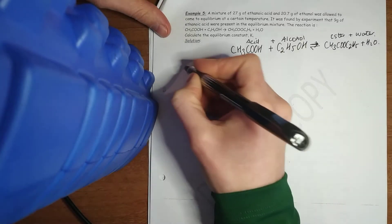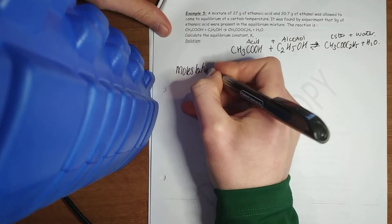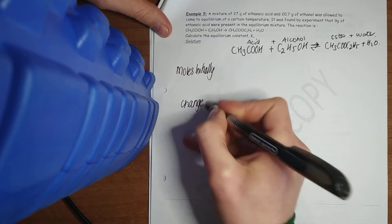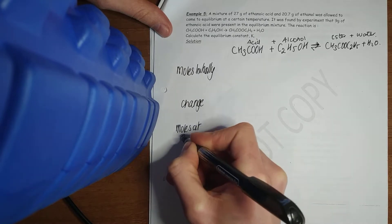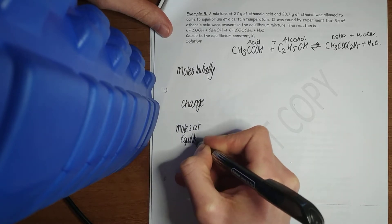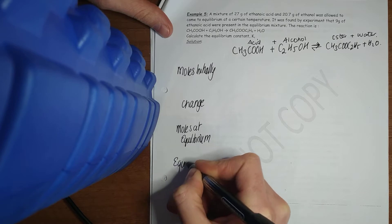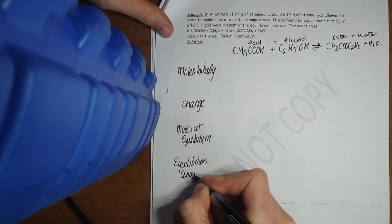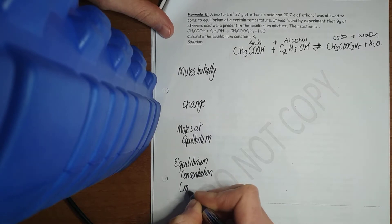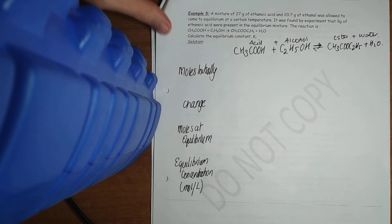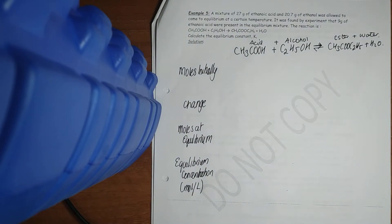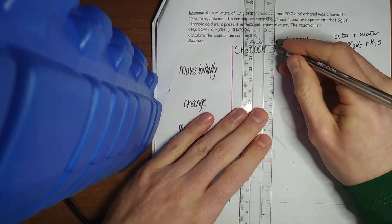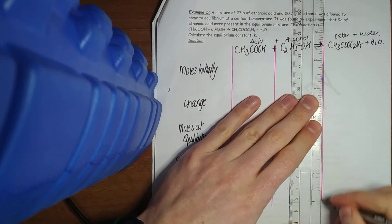Now same layout. Moles initially. Change. Moles at equilibrium. And you get your marks for your layout as well. And equilibrium concentration. Remember your equilibrium concentration is in moles per liter. Start to like this table format now to be honest.